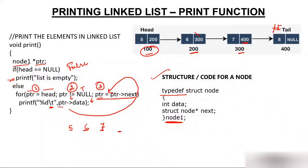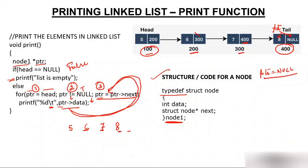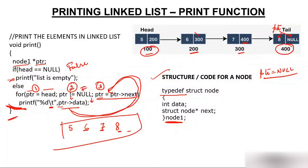Ptr is at 400, not null — condition true. We go inside and print ptr's data, which is 8. Tab gives space. Then ptr = ptr->next — what is in ptr's next? Null. So ptr now has null. We go to the condition check: is ptr not equal to null? No — ptr is null, condition becomes false. We exit the for loop and come out of the print function. The final output printed is 5, 6, 7, and 8, which is correct.